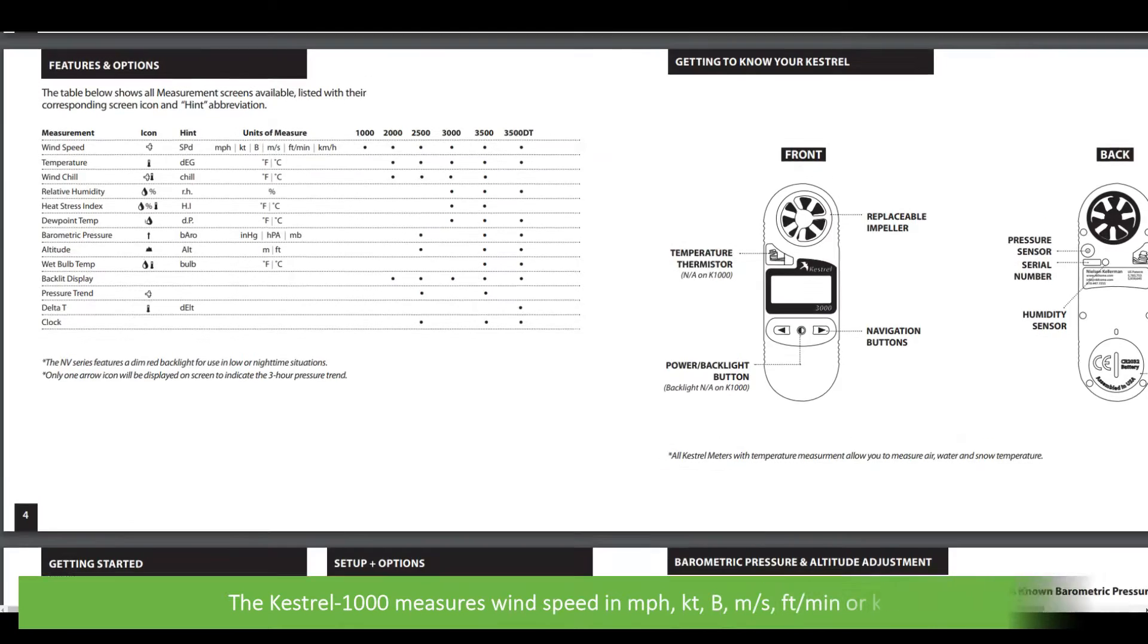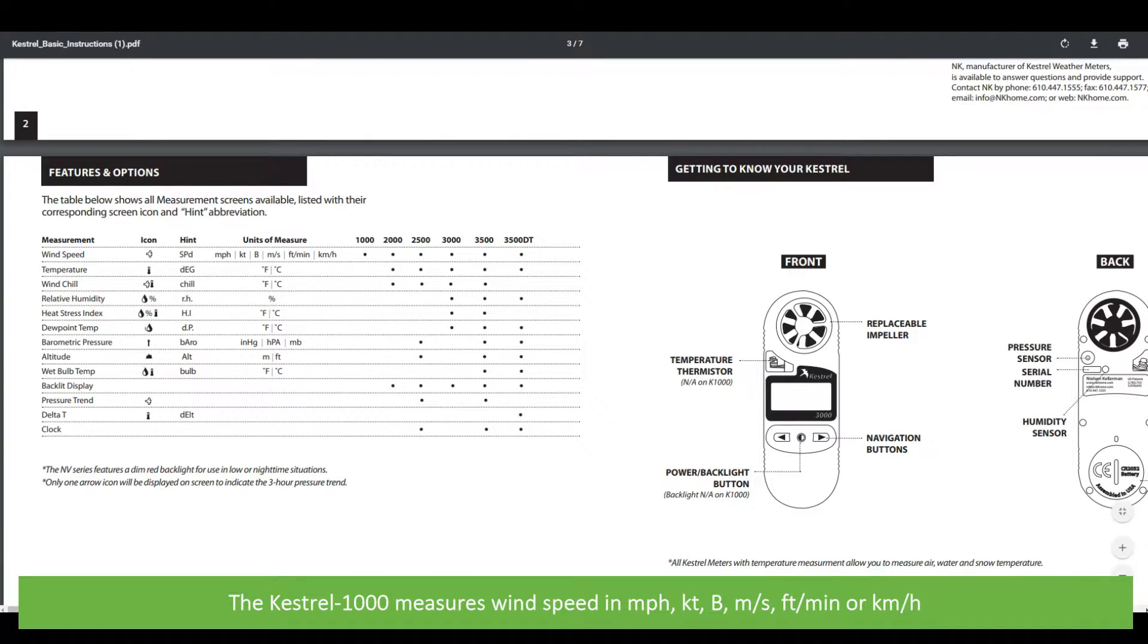The Kestrel 1000 measures wind speed in miles per hour, knots, the Beaufort scale, meters per second, feet per minute, or kilometers per hour.